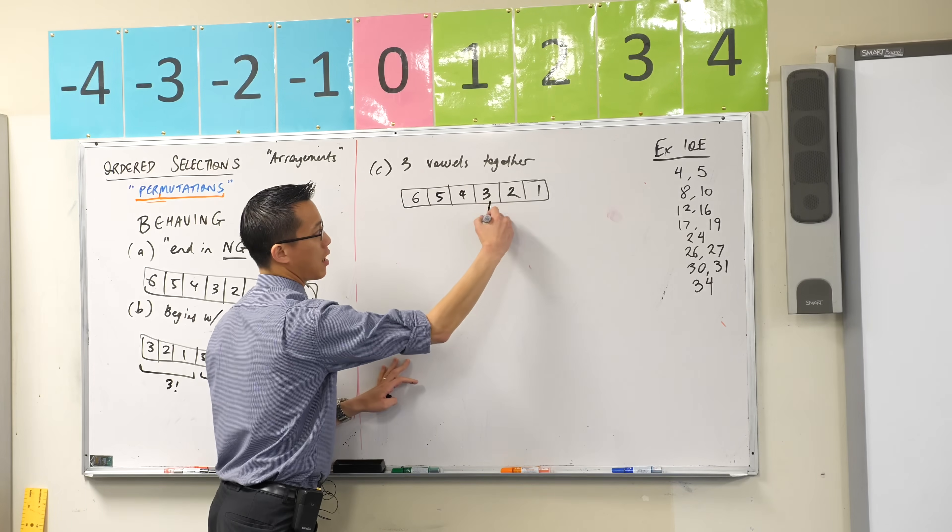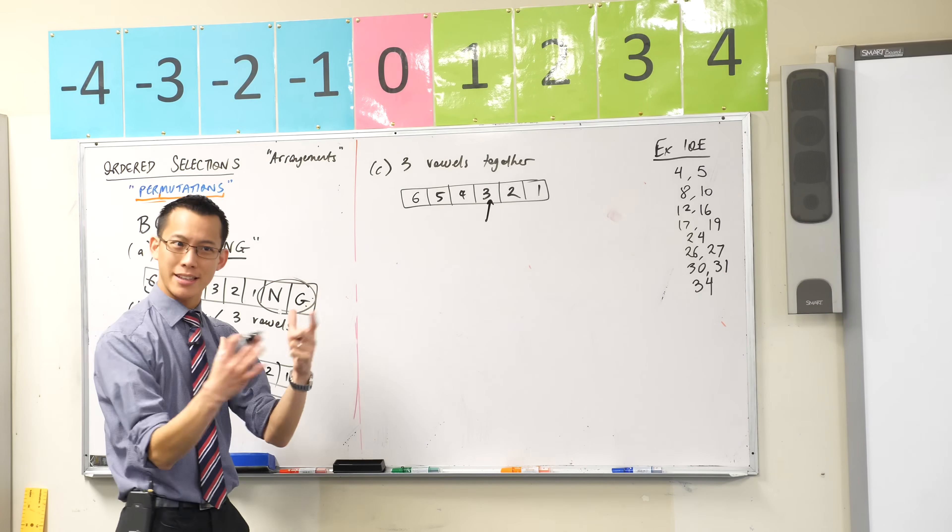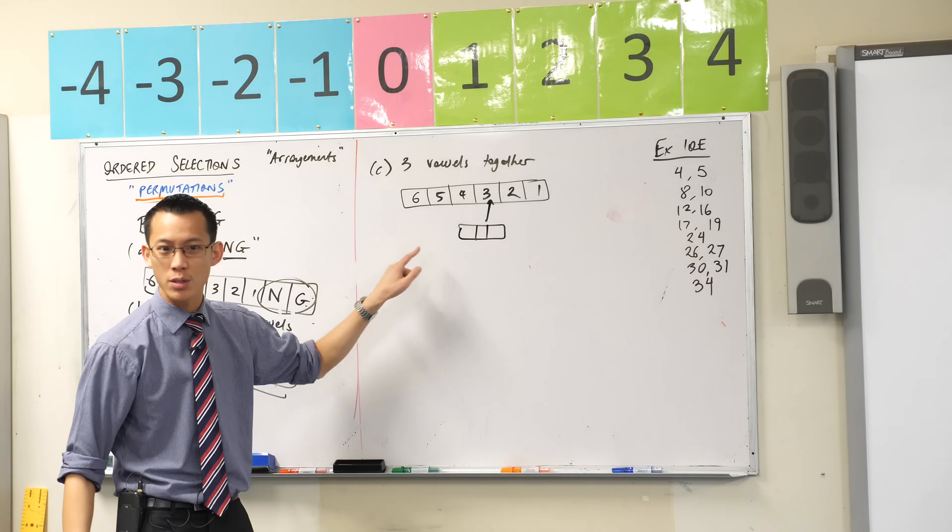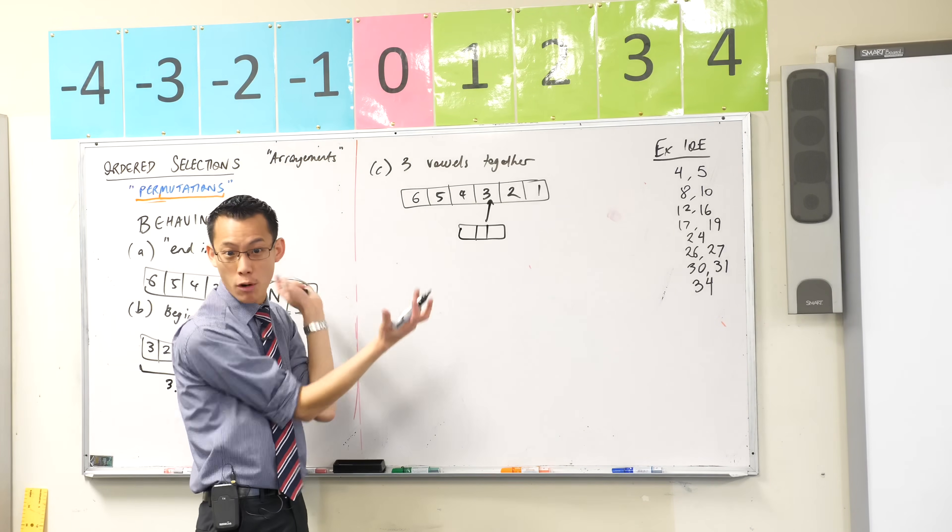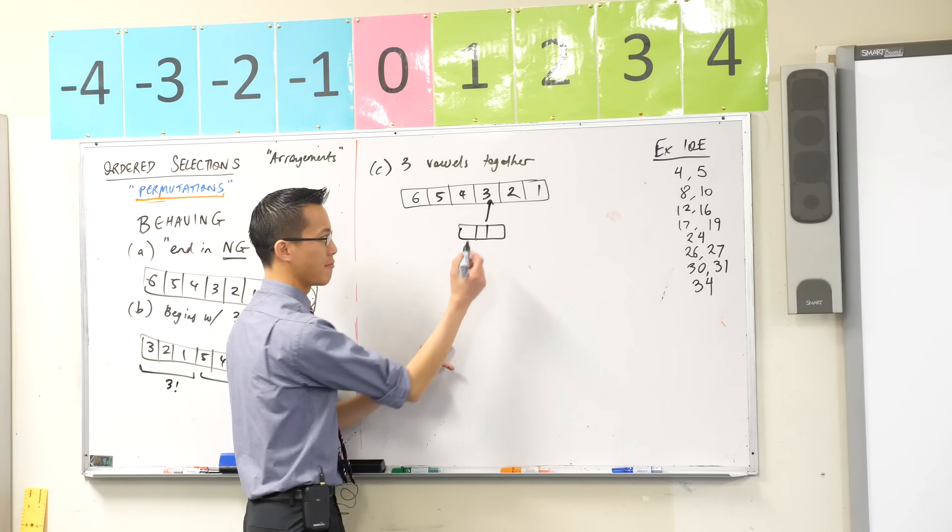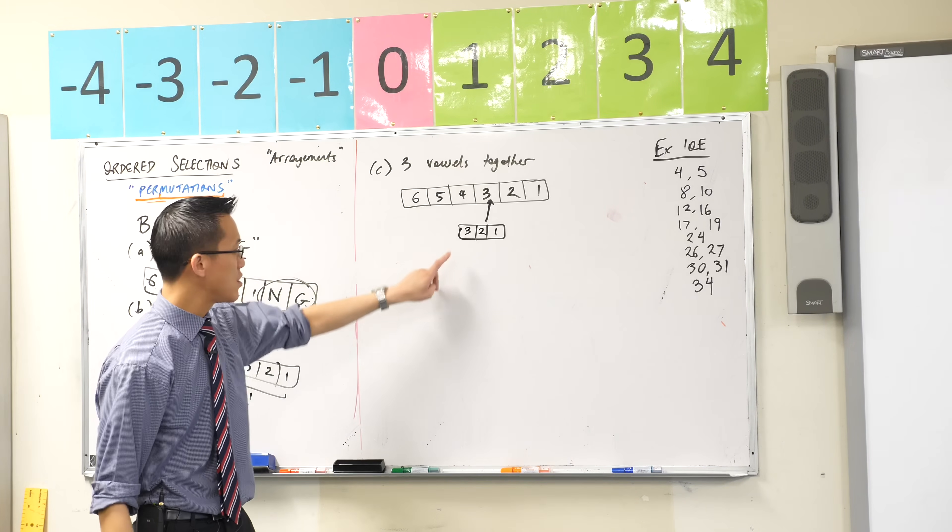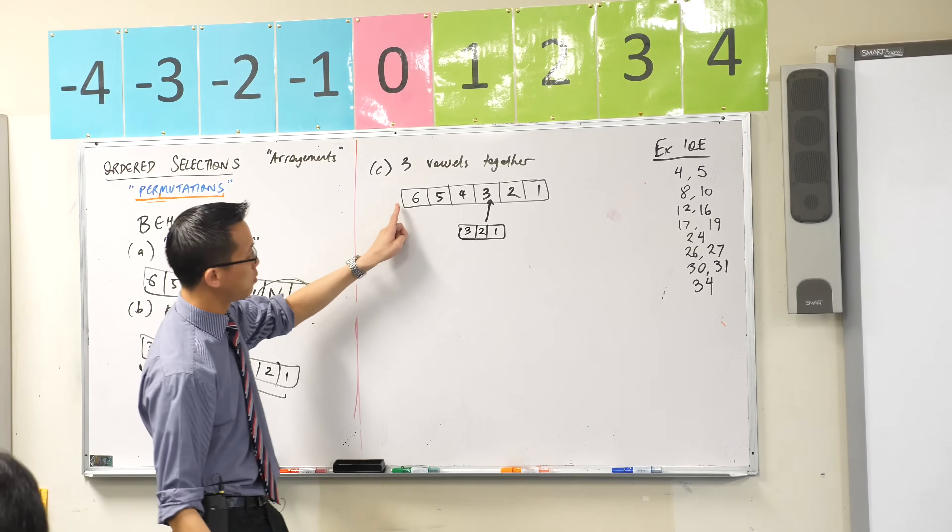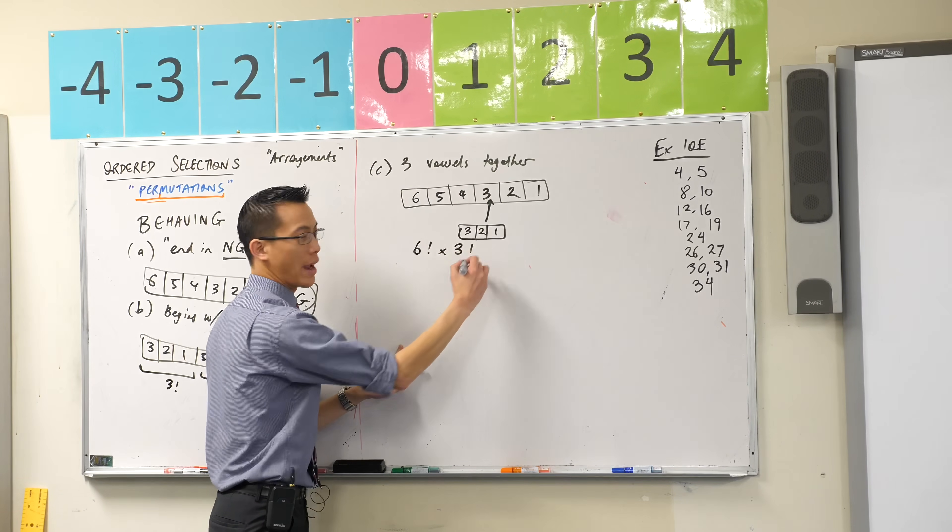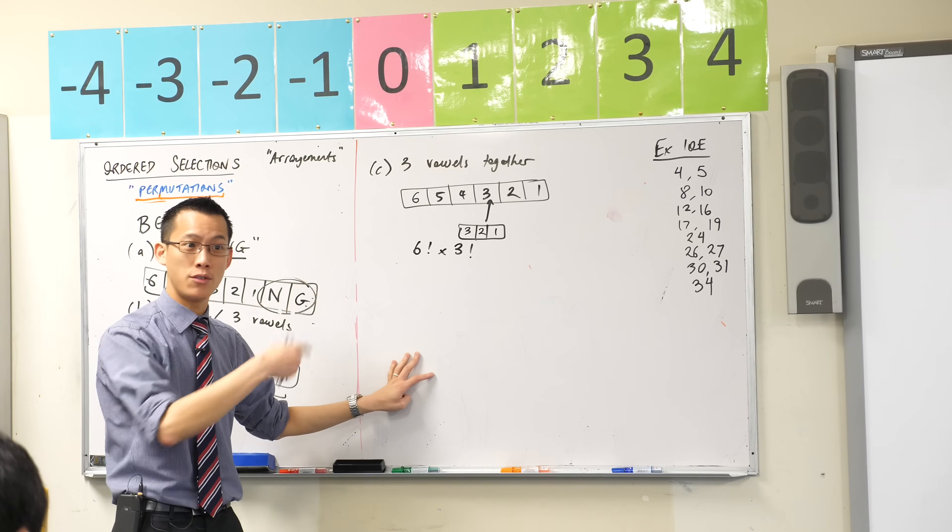But now suppose, suppose the vowels are here, right? Suppose I put them in there. Well, this vowel object has more complexity. There's three spots that I can put those vowels into within that super object, right? So how many choices will I have each time? Three, then two, then one. Does that make sense? So you can see here, I've got to multiply all these together, which will give me the six factorial. But then I've also got to arrange the vowels between themselves, which is three factorial, which will give you more options.